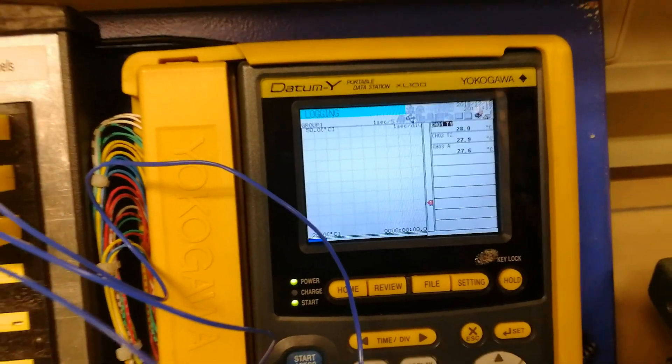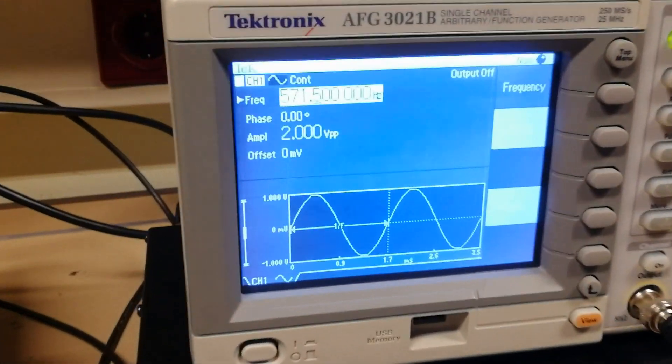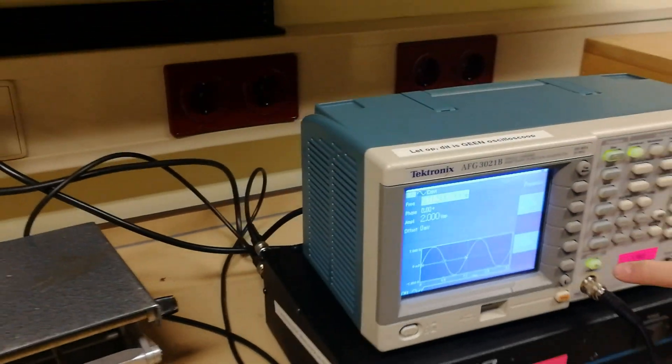A function generator with an amplifier is used to generate electrical signal for the speaker. As you can see, a frequency of 571.5 Hz is used.